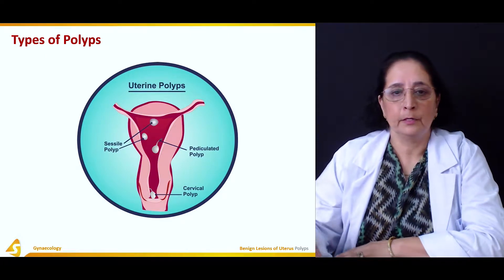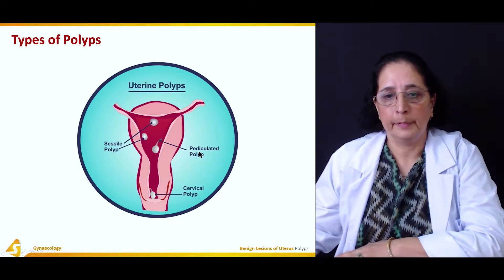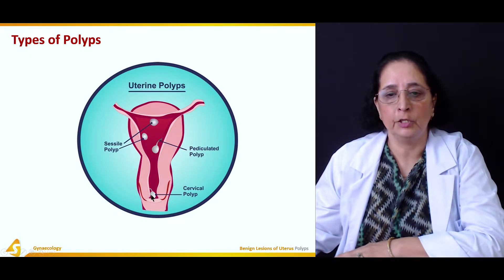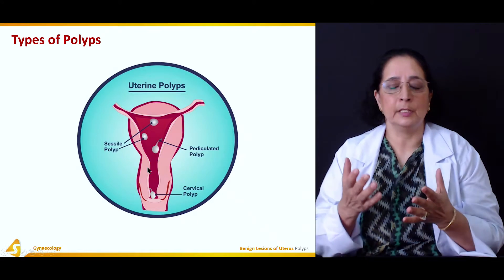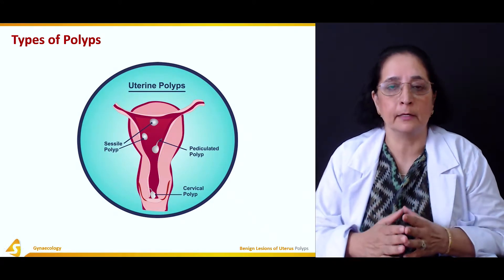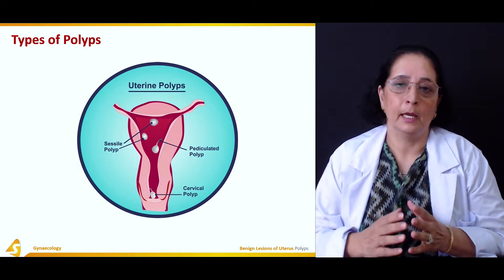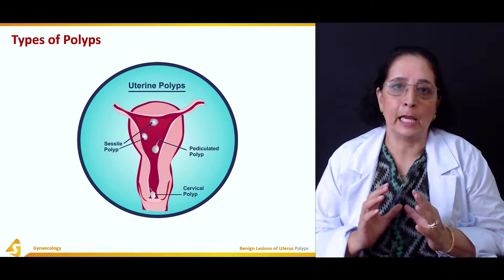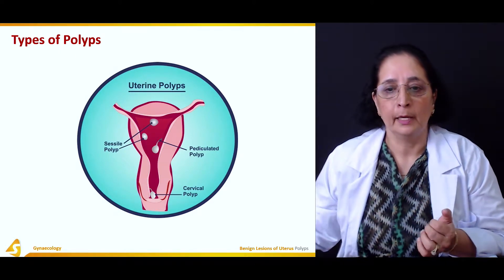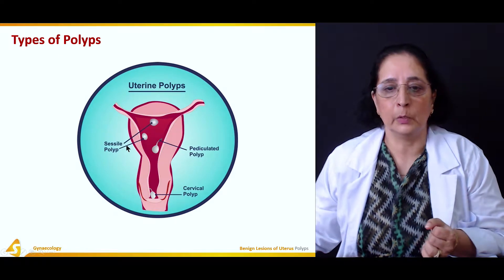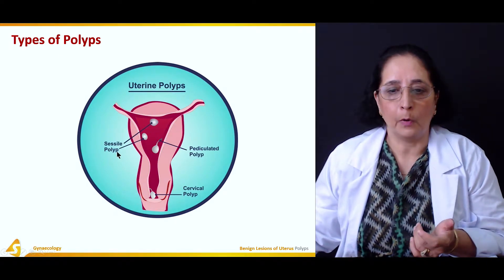The different types of polyps include pedunculated polyps, sessile polyps, and polyps in the cervical cavity — these are cervical polyps. Polyps are usually present in the uterus and cervix. If attached with a stalk they are pedunculated; if there is no stalk they are sessile polyps.